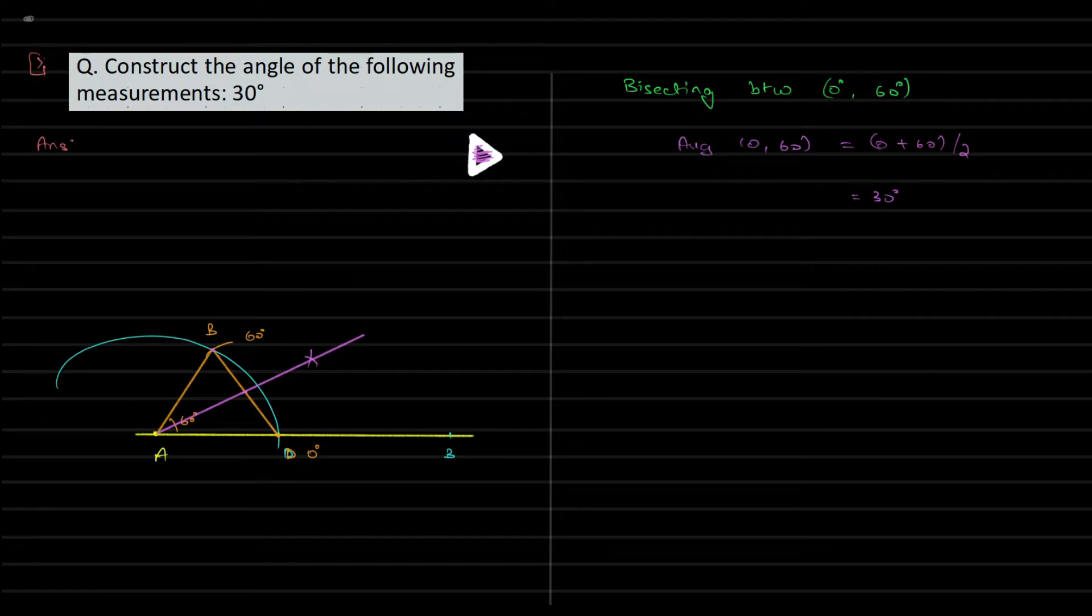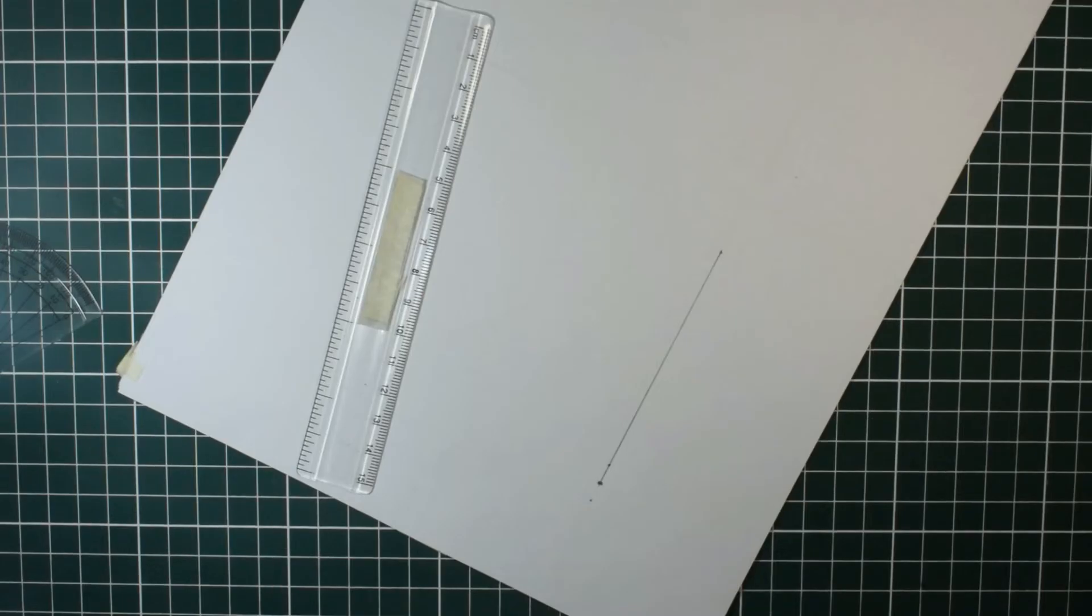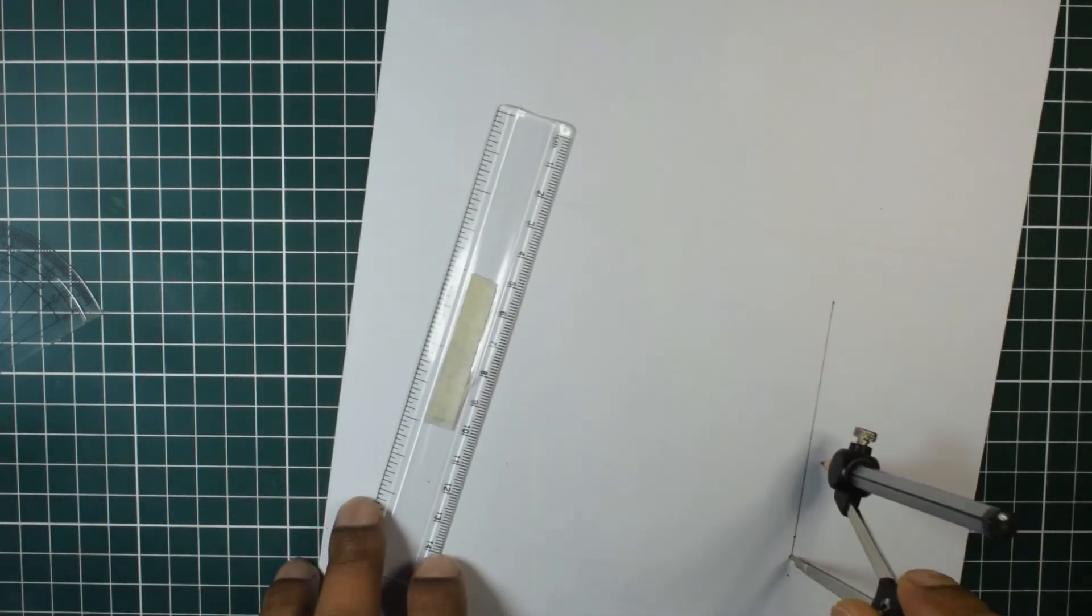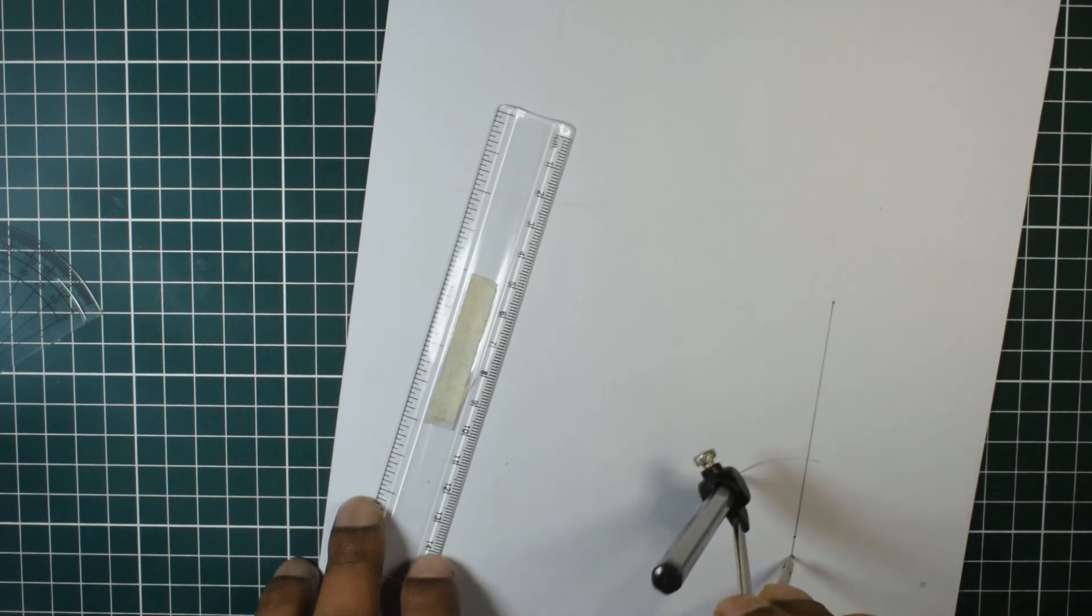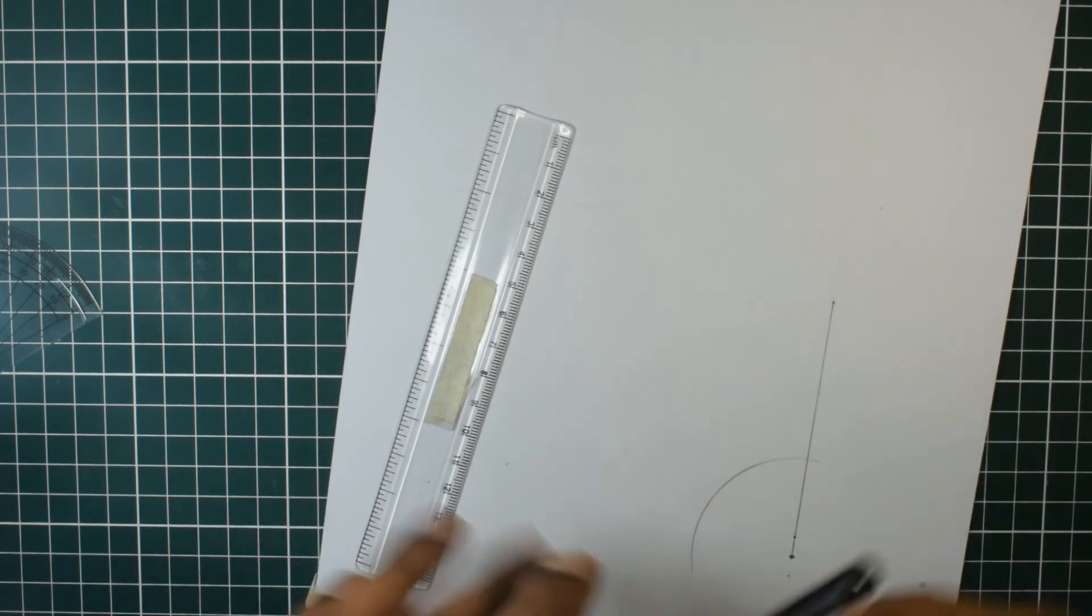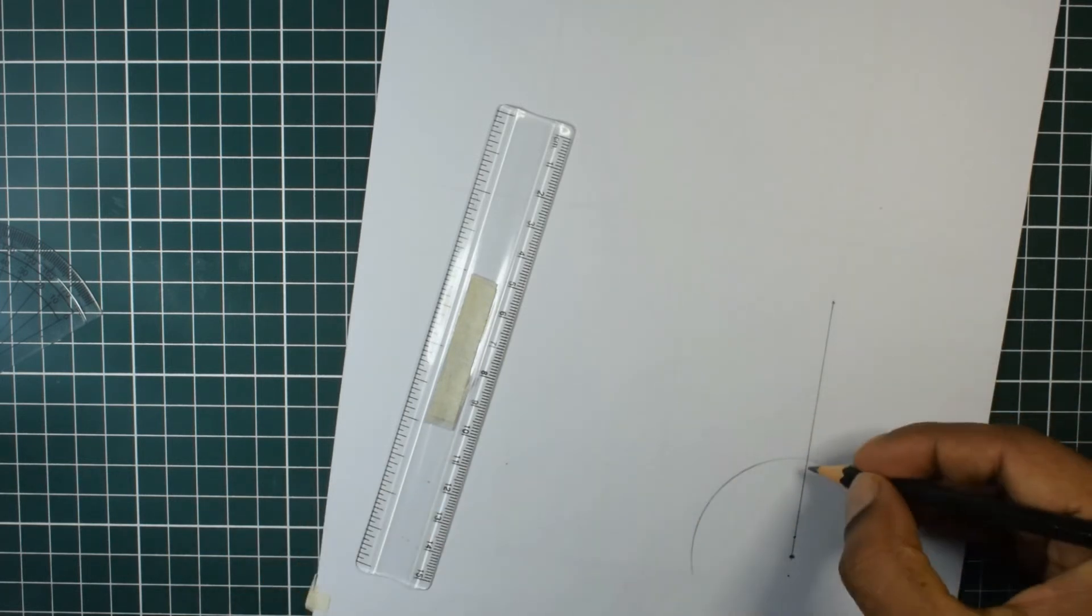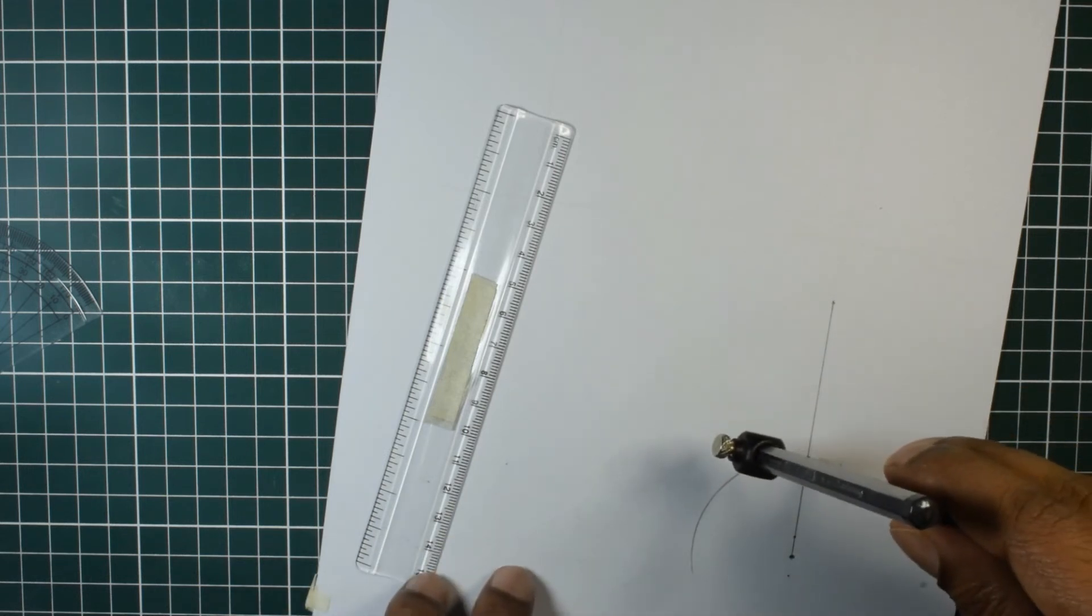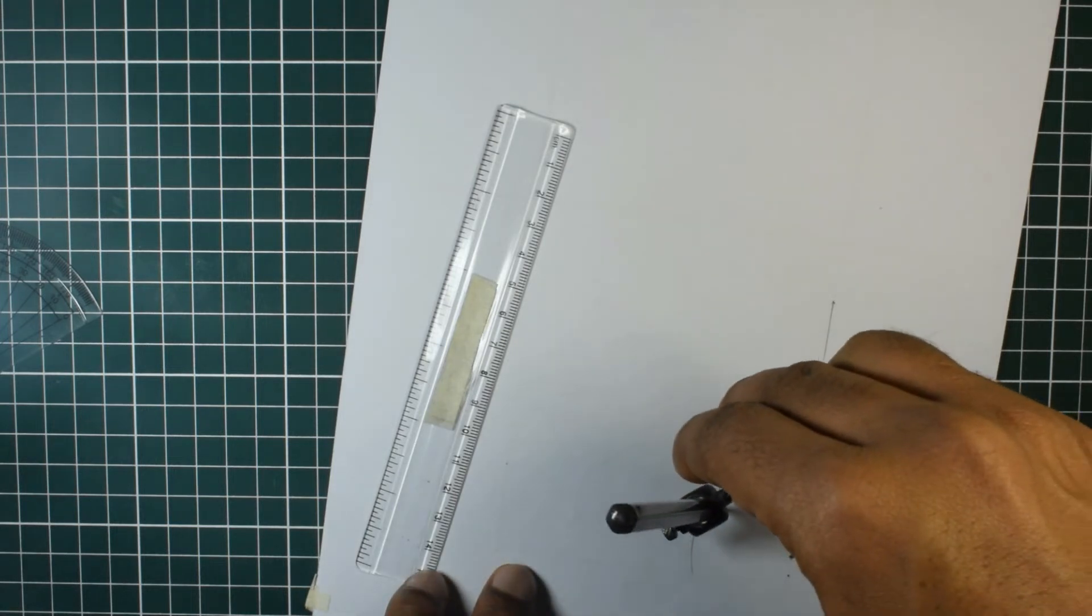Do the same along with me. First, I've already drawn a line segment, then we have an arc of any radius, doesn't matter. So the point of intersection of the arc and the line segment, draw one more arc. So we have that to be 60 degrees.